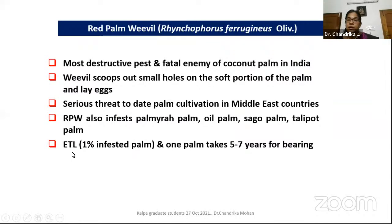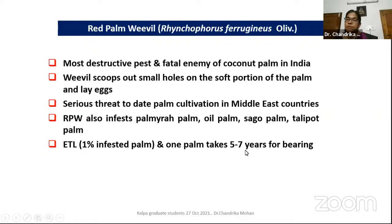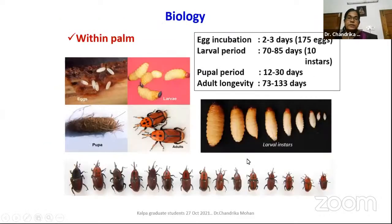The economic threshold level is one percent of infected palms. Even one palm in the garden infected means we have to go for control measures. That is the importance of this pest — one palm takes about five to seven years for bearing, so even one palm lost is at the ETL level.